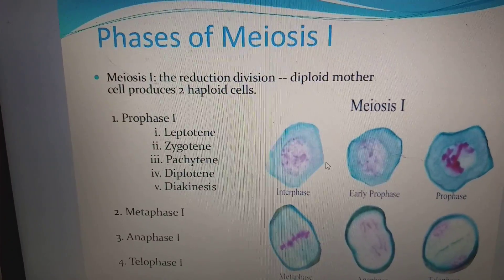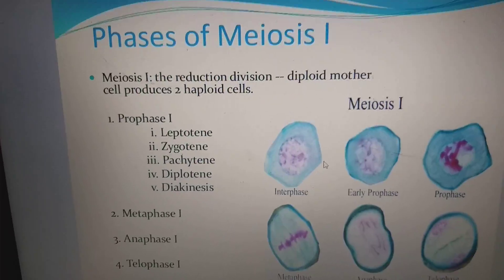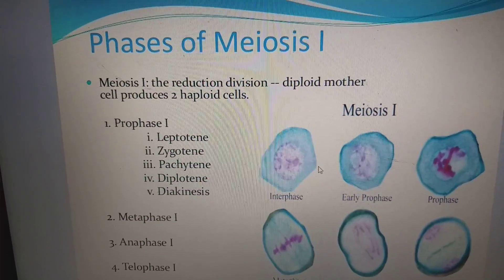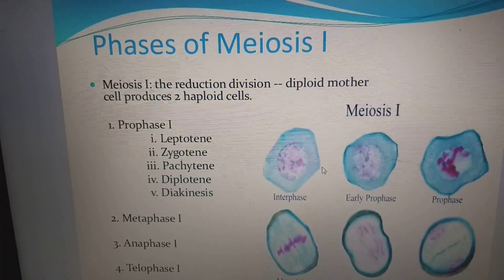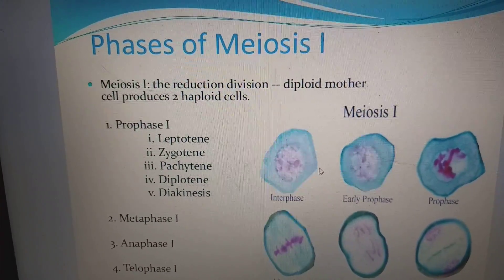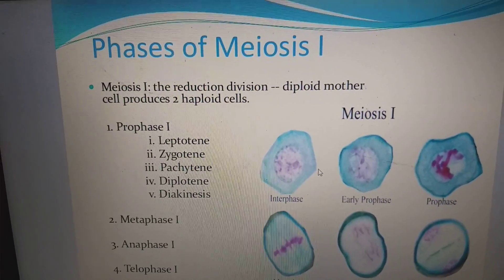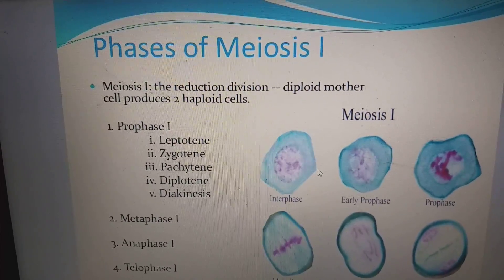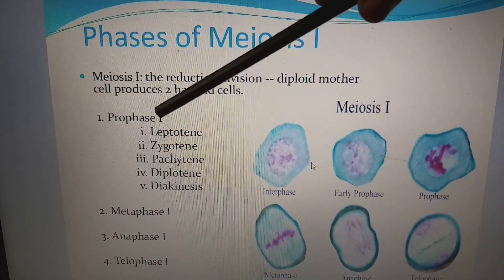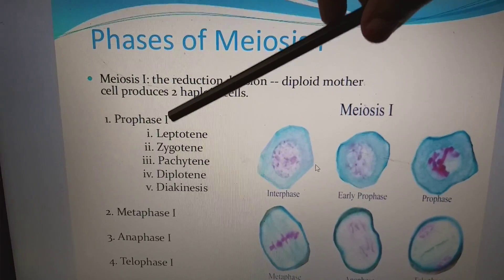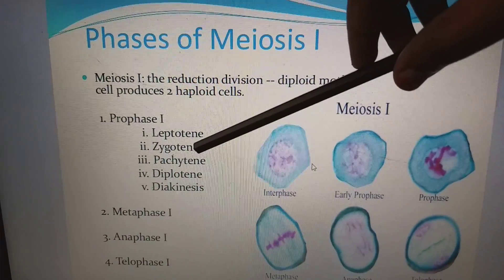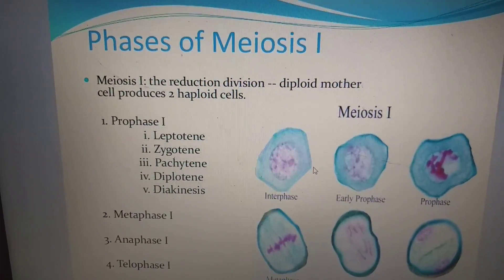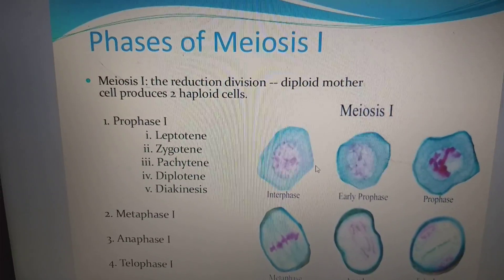Phases of Meiosis I: Meiosis I is the reduction division, because it produces cells with half the number of chromosomes of the parent cell. The second meiosis is very similar to mitosis and is called equational division. The diploid mother cell produces two haploid cells. It begins with interphase, then moves to prophase I — which is divided into leptotene, zygotene, pachytene, diplotene, and diakinesis — followed by metaphase I, anaphase I, and telophase I.